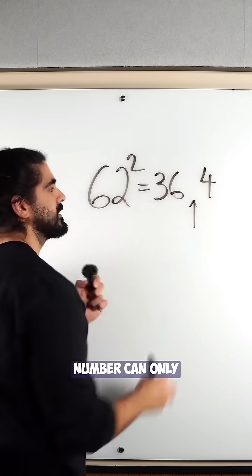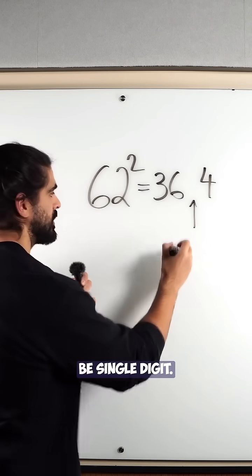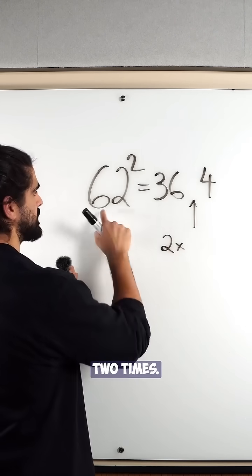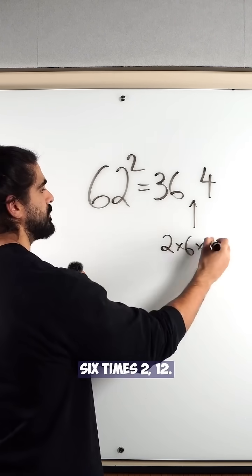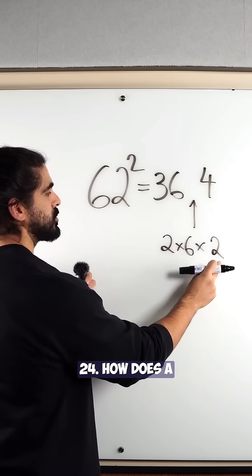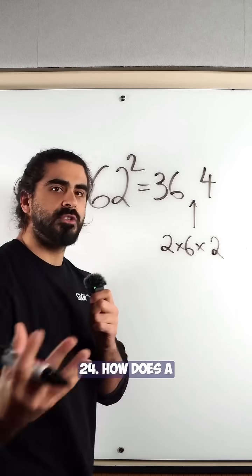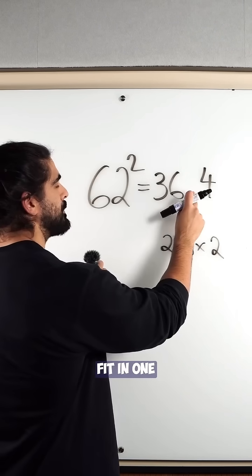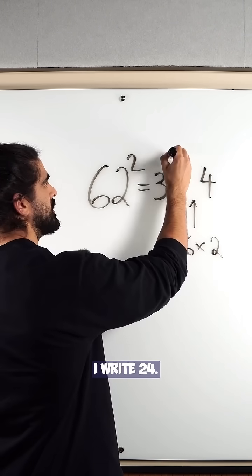Now remember this number can only be single digit. 2 times 6 times 2. 12, 24. How does a two-digit number fit in one position? I write 24.